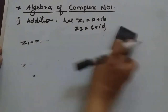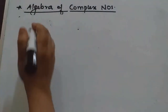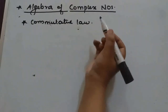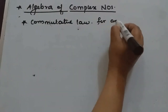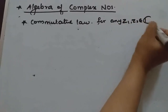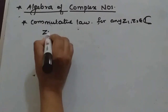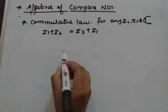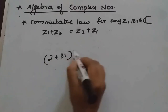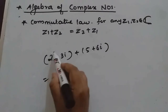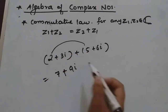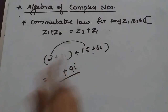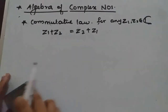Commutative law: for any two complex numbers, z1 plus z2 equals z2 plus z1. For example, (2 plus 3i) plus (5 plus 6i) gives 7 plus 9i, and the answer is the same after interchanging the numbers. So commutative law holds true under addition.